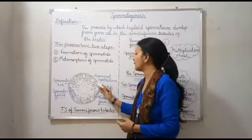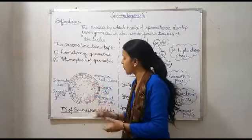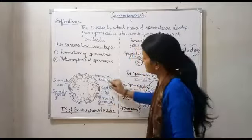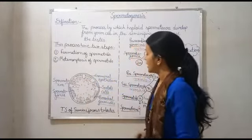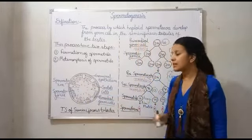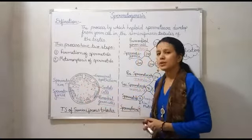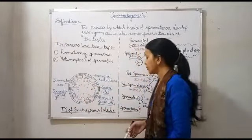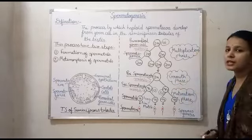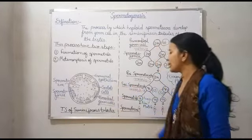शुरू-शुरू में जो chromosome number होता है वो remaining same होता है। उसके बाद meiotic division के बाद gametes form होने शुरू हो जाएंगे — यहाँ spermatids form होंगे, then spermatozoa form होंगे। इसके बीच में particular cells show हो रही हैं जिन्हें Sertoli cells कहते हैं। यह nursing cells भी कहलाती हैं, क्योंकि spermatogonia को nourishment provide करने का काम करती हैं। अब हम लोग एक flow chart देखते हैं जिससे यह पूरा process clear हो जाए कि किस cell से कौन सी cells form हो रही है। Germinal epithelium से primordial germ cells बनती हैं।